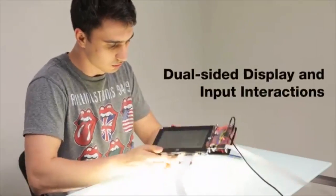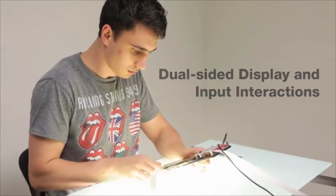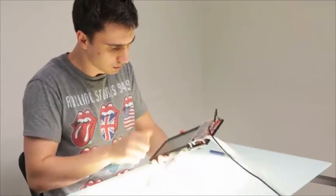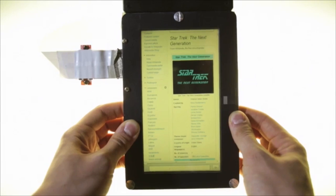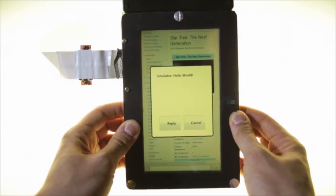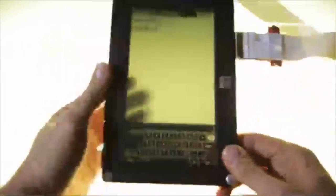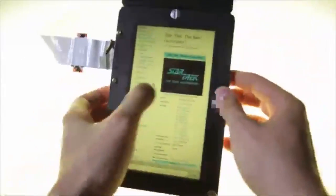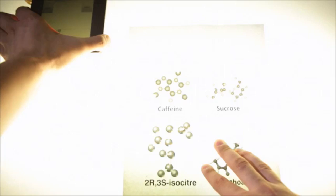The second category is dual-sided display and input interactions, and relates to the possibility to observe and use a transparent display from either side. For example, users can launch a second application or answer notifications on the reverse side of the T-Pad. Users can also copy and paste content from one side to the other by means of a tap-and-flip gesture.